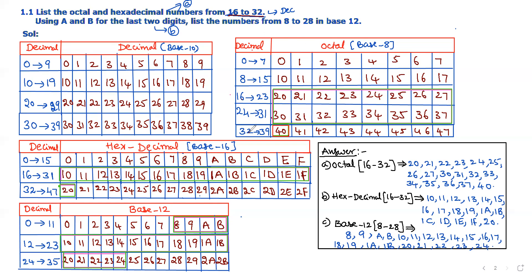The second table has the first column representing the list of decimal numbers and the remaining columns representing equivalent octal values. For the octal number system, the radix or base is 8. Base 8 means it should have octal digits from 0 to 7 only. With these digits 0 to 7, we can represent any decimal value. For the first sequence from 0 to 7 in decimal, the octal number system also has 0 to 7. From 8 to 15 in decimal, the equivalent octal values are 10 to 17.